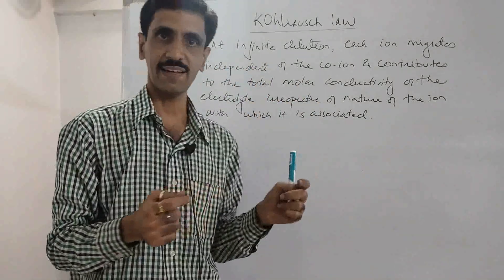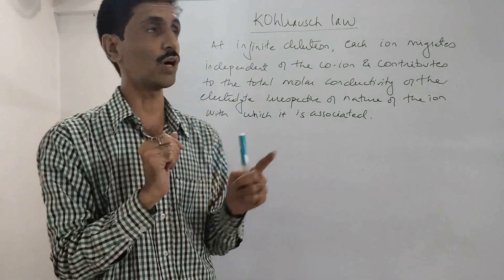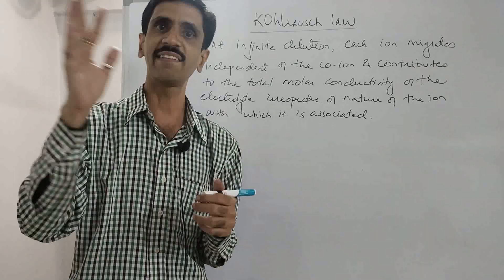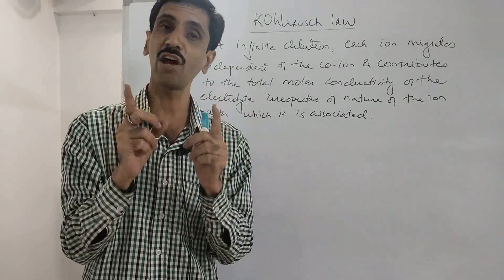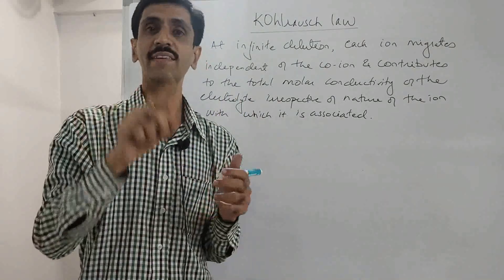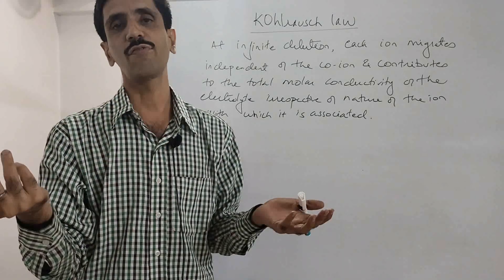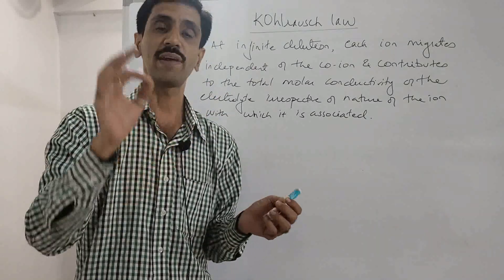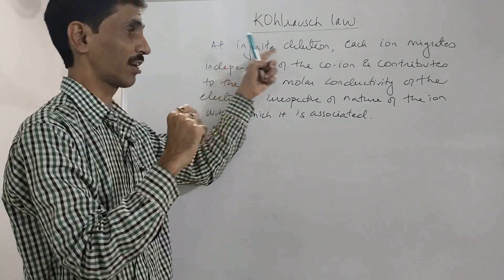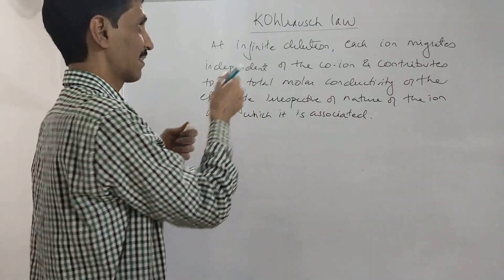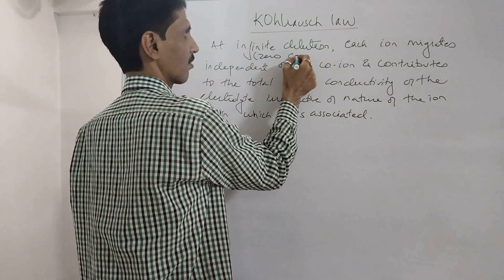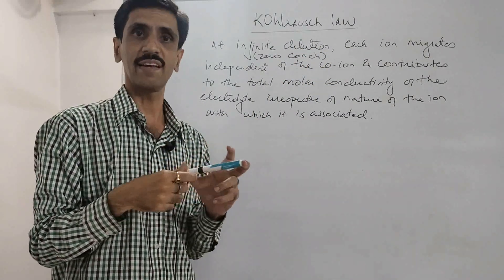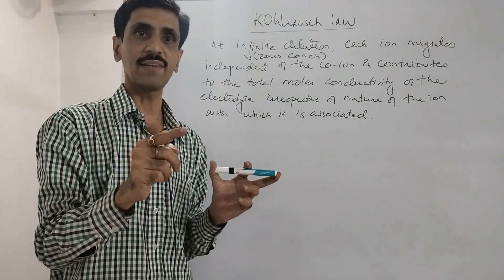The migration of that particular ion is independent of the nature of the other ion. The condition is that this holds at infinite dilution. Dilution means addition of water, while concentration is removal of water — so dilution and concentration are inversely proportional. Infinite dilution can also be called zero concentration.